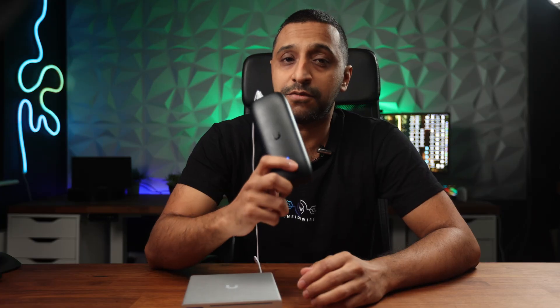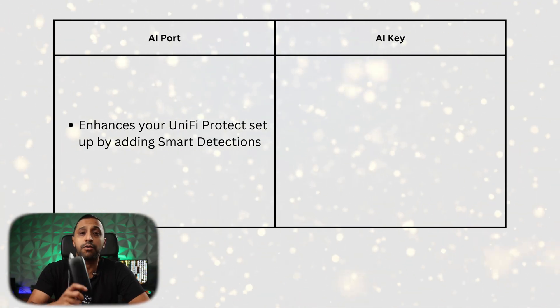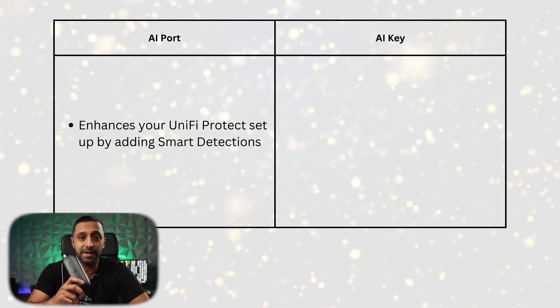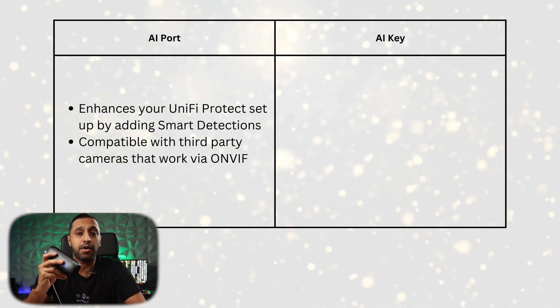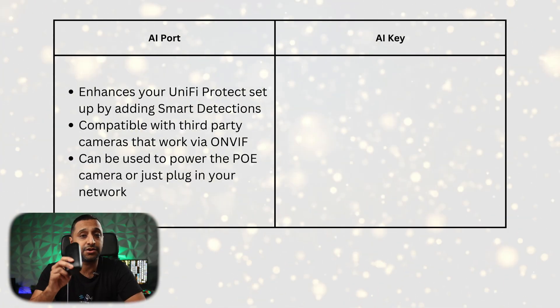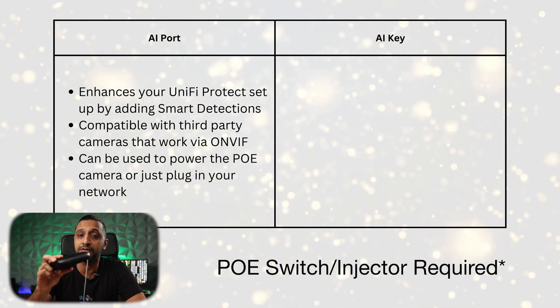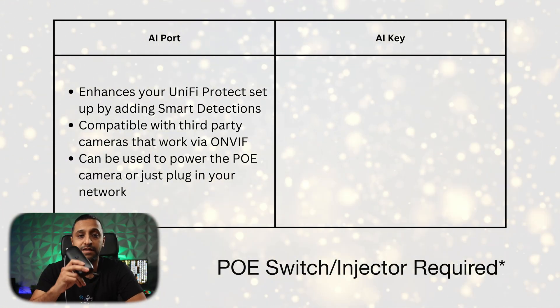First, let's talk about the AI Port. This device is an AI appliance that enhances your Unifi or third-party cameras with AI detection capabilities. It's compatible with third-party ONVIF cameras, and you can either connect it directly to your network or use it to power your cameras themselves.